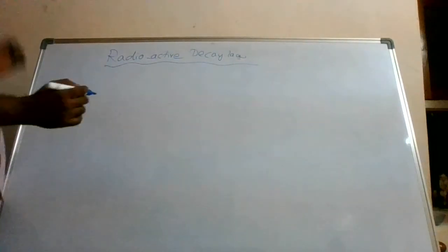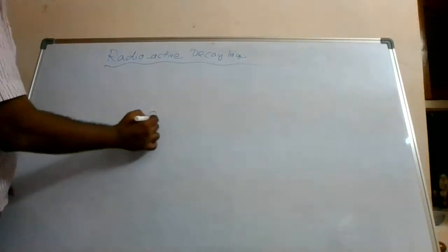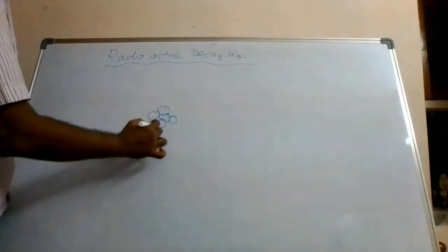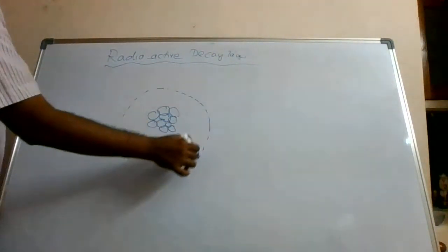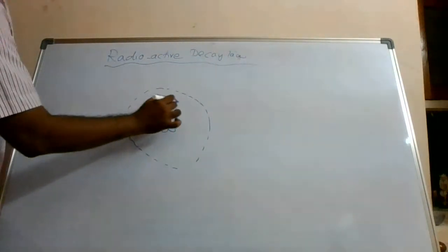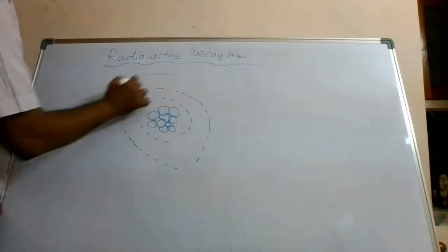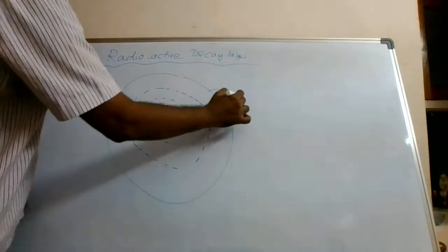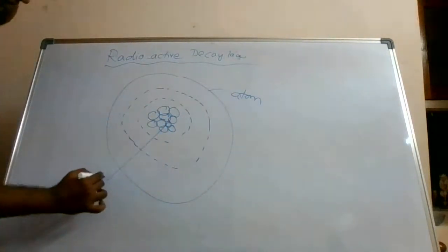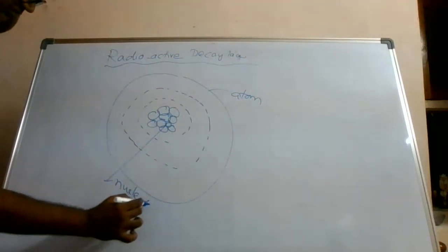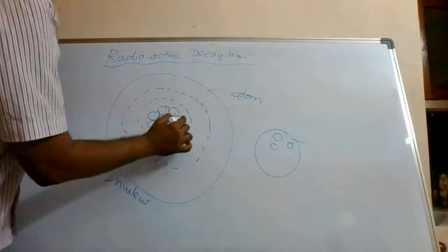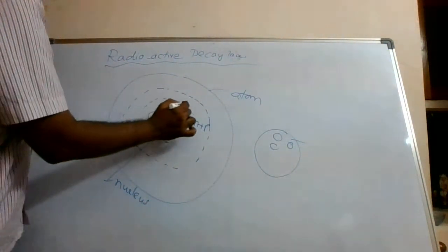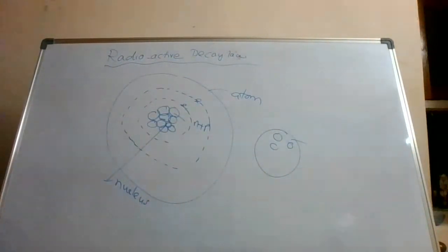In the previous sessions we discussed atomic structure — electrons rotating in orbits, and the center portion is the nucleus. It is not a solid ball inside; it is basically a bunch of neutrons plus protons, and electrons are rotating in particular orbits. This is your atomic structure.